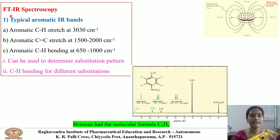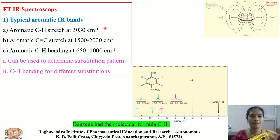FTIR stands for Fourier Transform Infrared Spectroscopy. With the help of FTIR spectroscopy, we can find out the functional groups in unknown compounds. Aromatic compounds show a characteristic IR spectrum. For example, aromatic C–H stretching is observed at 3030 cm⁻¹, where we can observe a sharp peak. Aromatic C=C stretching is observed at 1500 to 2000 cm⁻¹, and aromatic C–H bending is observed at 652 to 1000 cm⁻¹. This can also be used to determine the substitution pattern.